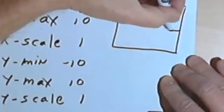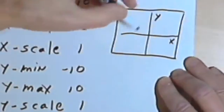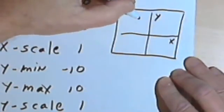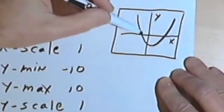Let's say I've got a viewing window for my graph. Let's say it's something like that. And the graph I'm going to put in actually looks something like this. It's an upward opening parabola.